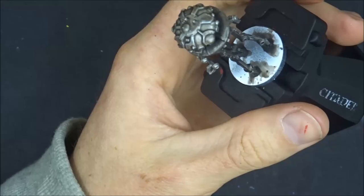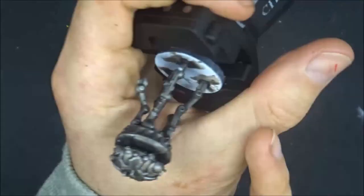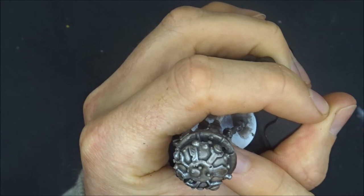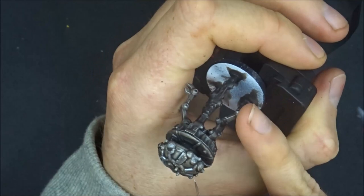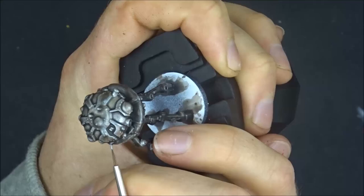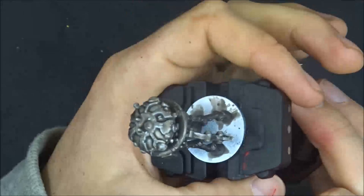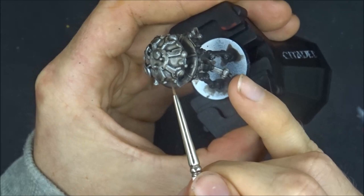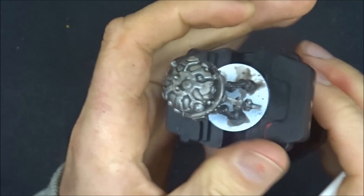And now as a bit of a highlighting process I'm just going back with the blade steel and just picking out the edges of the areas that would be getting the most light. From that zenithal prime the parts that were still white I'm now just going over those edges picking them out to really bring out the metallic look, just enough to give the impression so that it still looks like some parts of the mini are reflecting light and some parts aren't.